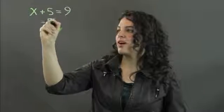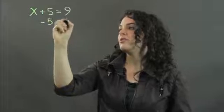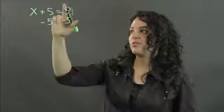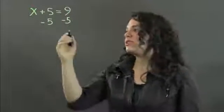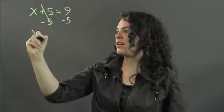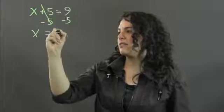And we're going to subtract 5 from both sides. Whatever you do to one side, thou shalt do to the other side in order to preserve the equality of each side. So when we subtract 5 from this side, these cancel out and we just get x. And 9 minus 5 is 4.